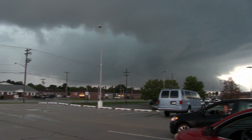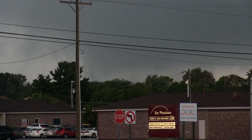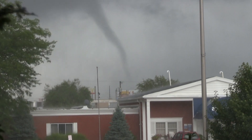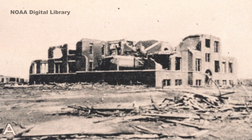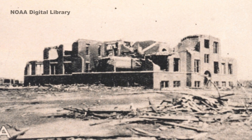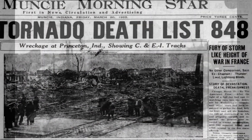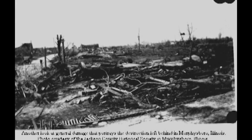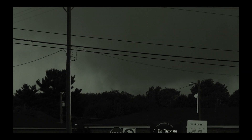Each year, over 1,200 tornadoes touch down across the United States. The majority of these tornadoes are weak, causing minimal damage over a span of only a few miles. But 100 years ago, in March of 1925, a tornado of epic proportions would tear a path through three states in the Midwest. Its name lives in infamy as the worst event of its kind in American history: the Tri-State Tornado.